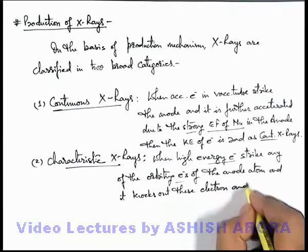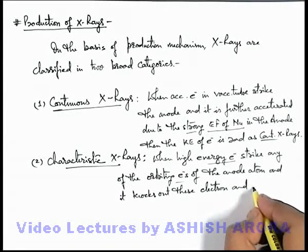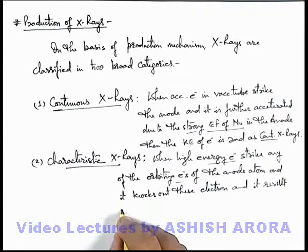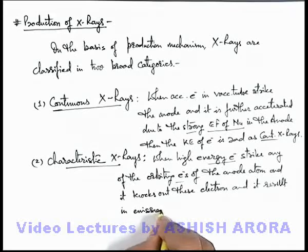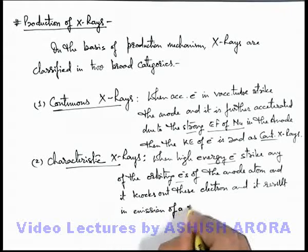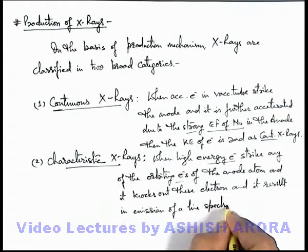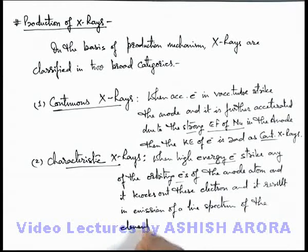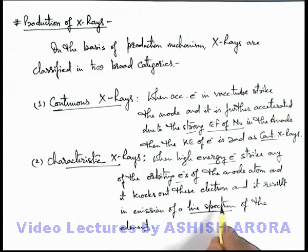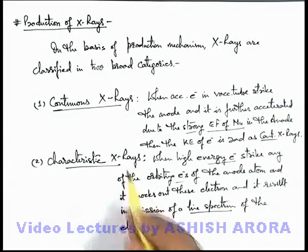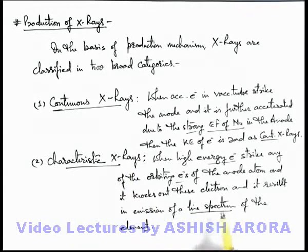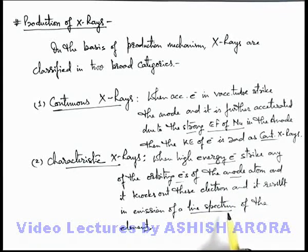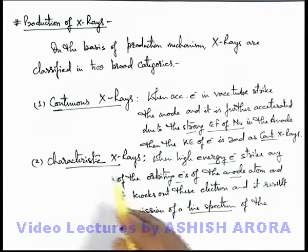And due to the vacancy created, we can say it results in emission of a line spectrum of the element. This line spectrum wavelengths are called characteristic X-rays. And as for a given element of which the anode is made up of, there are some specified wavelengths which are emitted. That's why these are called characteristic X-rays.